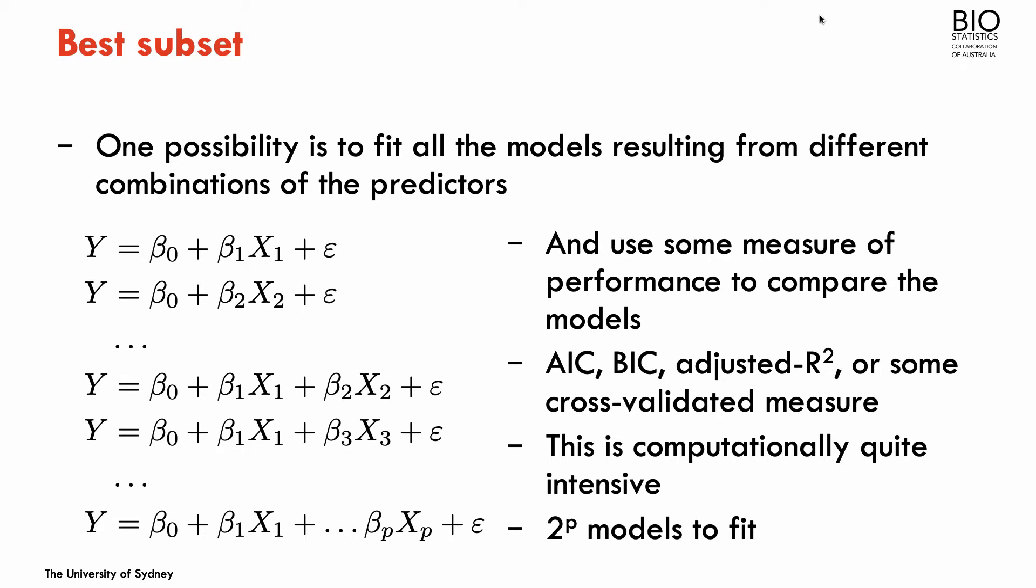So one possible way of finding the best subset of variables that predicts the outcome is to fit all the possible models with that set of predictors. So all the models with one predictor, all the models with two predictors, all the models with three predictors, up to the final model with all the predictors. And then use some statistics, some performance statistics, to select which one of these models is the best one. So we could use, for example, the AIC or the BIC, or the adjusted R-squared in the case of linear regression, or some cross-validated measure.